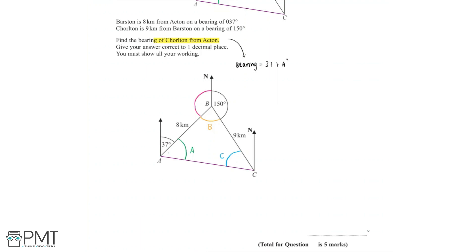We can start by finding the pink angle. We know that co-interior angles add up to 180 degrees. We can see that the pink angle and 37 degrees are co-interior, and so the pink angle would be equal to 180 take away 37, which is equal to 143 degrees.